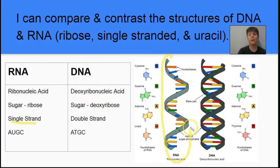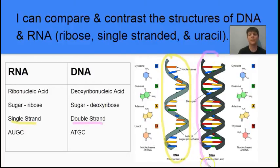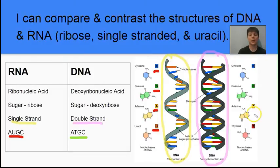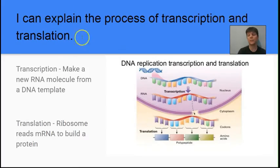The next learning target is to compare and contrast the structure of DNA with the structure of RNA. RNA is a single-stranded molecule — circled on the left side of the image in yellow. DNA is a double-stranded molecule, circled in pink. RNA contains the sugar ribose; DNA contains the sugar deoxyribose. RNA contains the bases A, U, G, and C, while DNA contains the bases A, T, G, and C. So the main differences are: RNA contains ribose, it is single-stranded, and it has the base uracil instead of thymine.